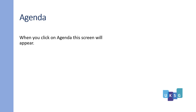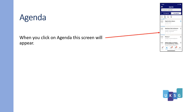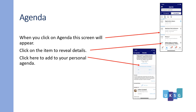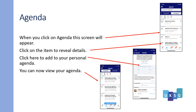Let's look at the agenda. When you click on agenda, this screen will appear. Click on the item to reveal details of the session. Click here to add your personal agenda, and you can then view your personal agenda.